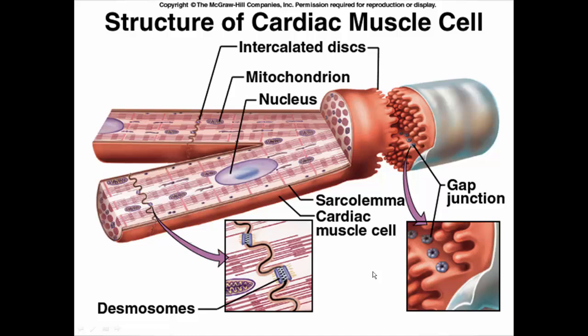Another difference we see with cardiac muscle cells is the number of mitochondria. 25 to 30% of the cytoplasm of a cardiac muscle cell is made up of mitochondria. In skeletal muscle, it's only about 2% — that's a big difference. Cardiac muscle cells are contracting all the time, so we need lots of mitochondria to provide all the ATP needed for muscle contraction. We also want all aerobic respiration — using oxygen to make lots of ATP. We don't want anaerobic respiration because that builds up lactic acid and would cause the muscle to fatigue. We don't want cardiac muscle to fatigue.